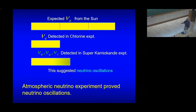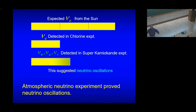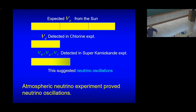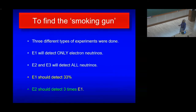The Kamiokande experiment detected 45%, which suggested neutrino oscillations, and the atmospheric neutrino experiment proved it. This was followed by the KAMLAND experiment: reactors produce anti-neutrinos, and there are reactors in Japan, China, and all over South Asia at various distances. The KAMLAND experiments confirmed neutrino oscillation to an even greater degree of accuracy. So the next job was to actually find the smoking gun, as John Bahcall said.